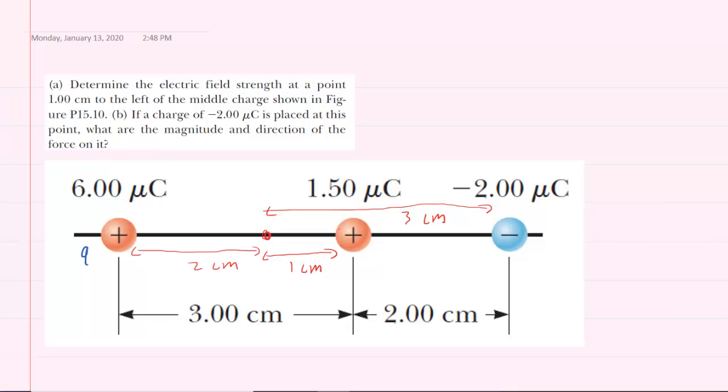We can label this charge q1, the middle charge could be q2, and then this charge here could be q3. It will be useful to draw three electric fields onto the diagram, each one produced by the three charges.